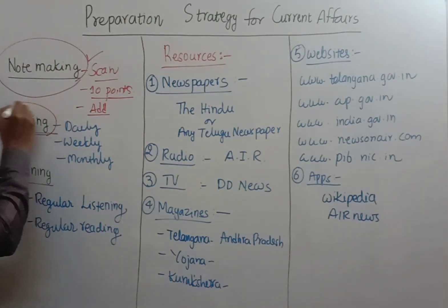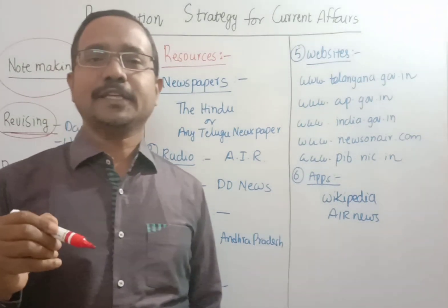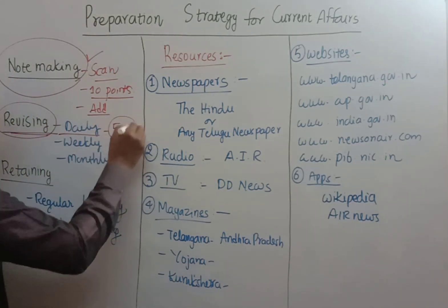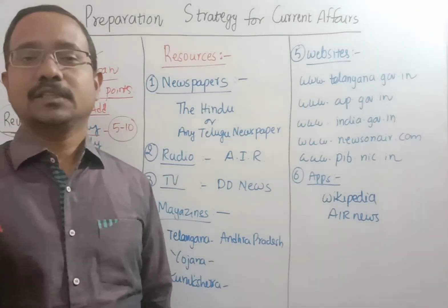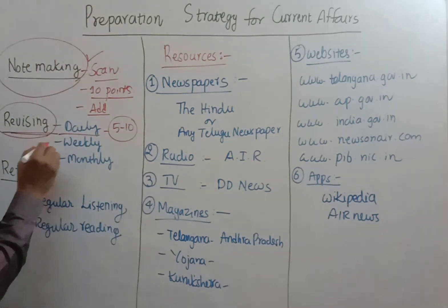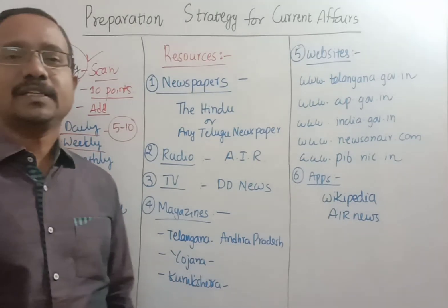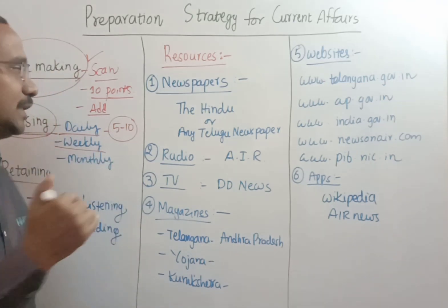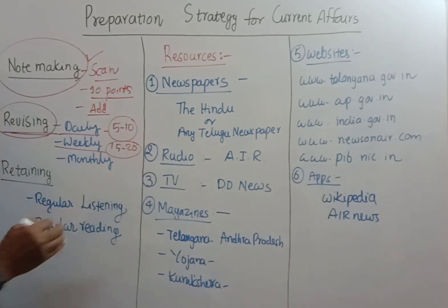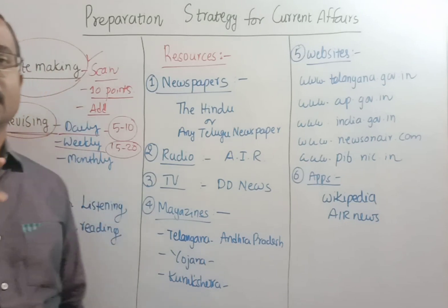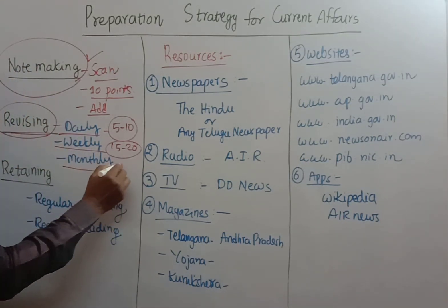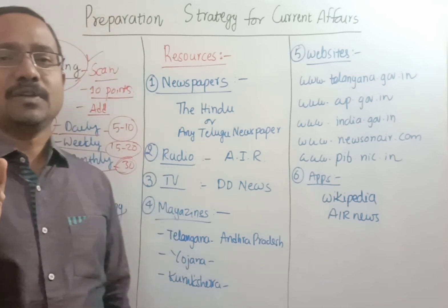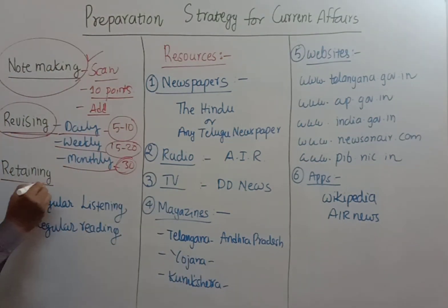The second most important step is revising. After completely making notes of daily current affairs, you have to revise them daily. At the end of the day, revise your current affairs for at least five to ten minutes — then only will they be retained for longer times. Every week, on Saturday or Sunday, you have to revise the entire current affairs of the week, which may take 15 to 20 minutes. The third revision step is monthly — you can revise the total month's current affairs in about half an hour.